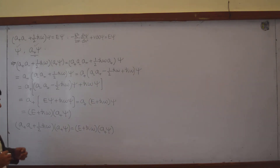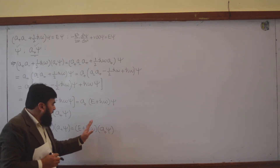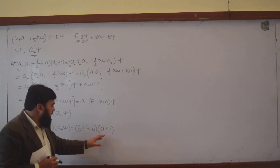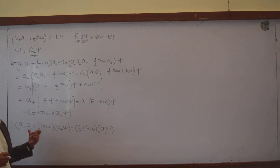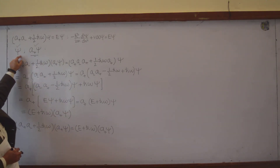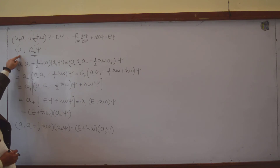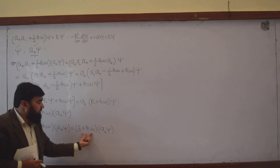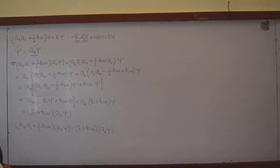The problem is not with the function — the problem is only with the energy. With ψ alone it gives energy E, but with a₊ψ it gives an additional ℏω. So the function is still a solution of the equation — this is the eigenvalue problem. ψ is an eigenfunction and a₊ψ is also an eigenfunction, but the eigenvalue of ψ is E while the eigenvalue of a₊ψ is E + ℏω. The eigenvalues are different, but the eigenfunctions are of the same type.